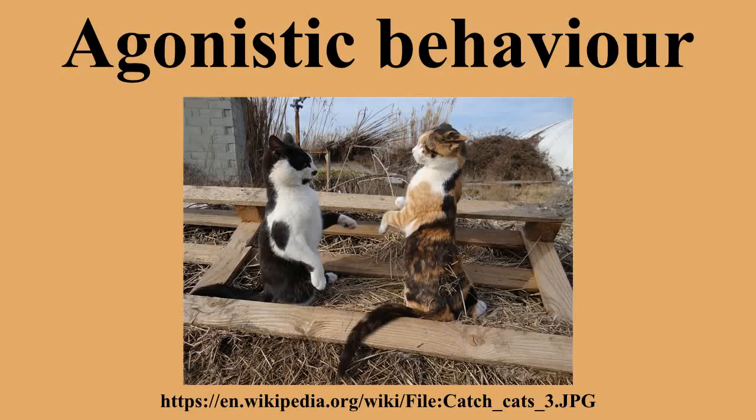Agonistic behavior is any social behavior related to fighting. The term has broader meaning than aggressive behavior because it includes threats, displays, retreats, appeasement, and conciliation. The term was coined by Scott and Fredrickson in 1951. Agonistic behavior is seen in many animal species because resources including food, shelter, and mates are often limited.